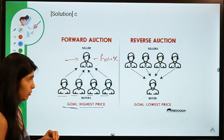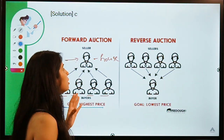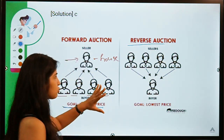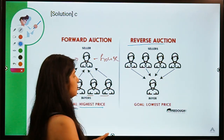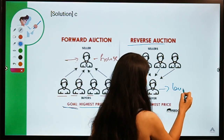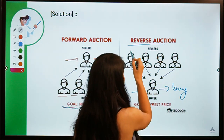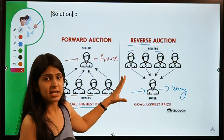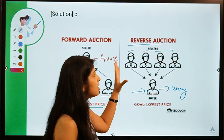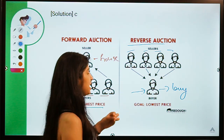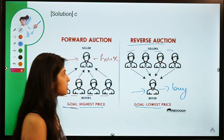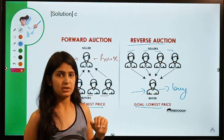Coming to reverse auction, here the situation is reversed. There is one buyer trying to buy some asset, and there are different sellers interested in selling their asset to this particular buyer. They bid, and whoever is willing to sell the asset at the lowest price wins. In a reverse auction, the goal is to get the lowest price.